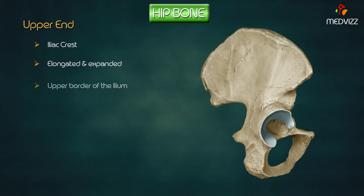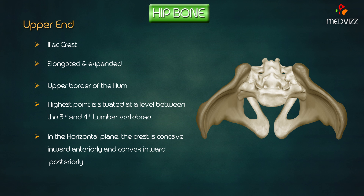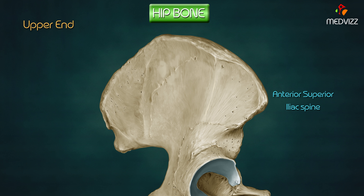The upper end, also known as the iliac crest, is elongated and expanded and makes up the upper border of the ilium. The highest point of the iliac crest is situated at a level between the third and fourth lumbar vertebrae. When viewed in the horizontal plane, the crest is concave inward anteriorly and convex inward posteriorly. The anterior superior iliac spine is a projection at the anterior end of the iliac crest, and the posterior superior iliac spine is a projection at the posterior end.